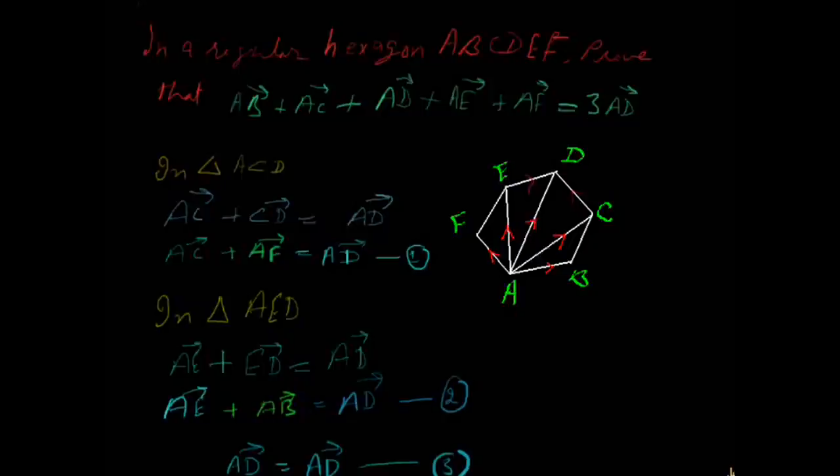Remember, in a regular hexagon ABCDEF, prove that AB vector plus AC vector plus AD vector plus AE vector plus AF vector is equal to 3AD vector.